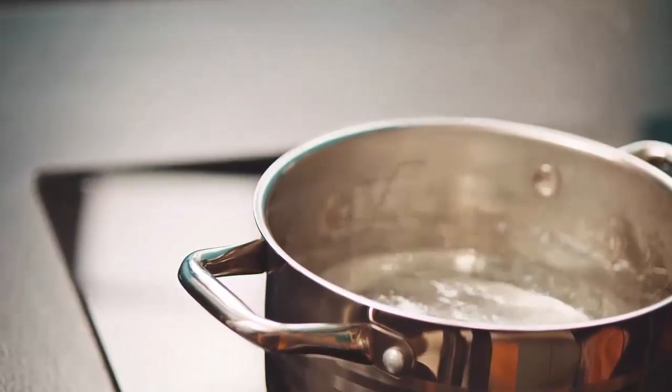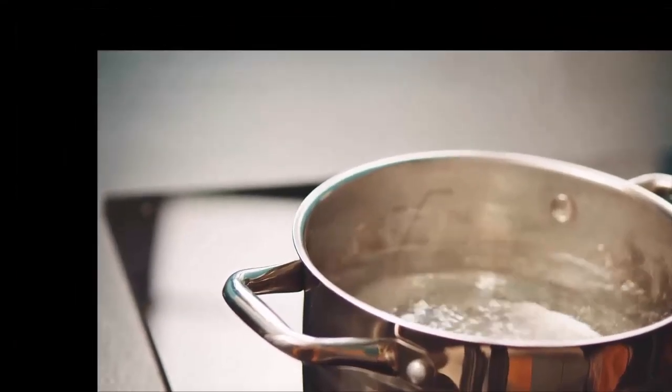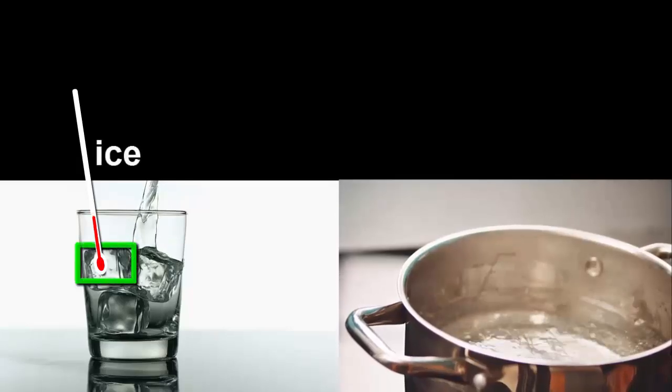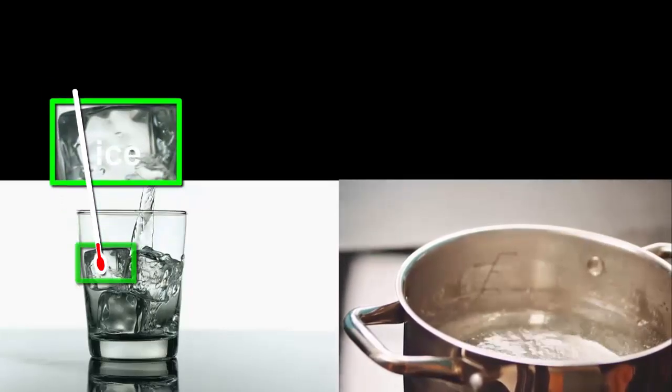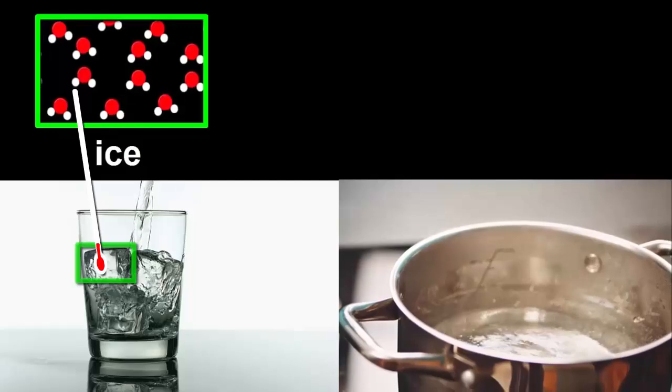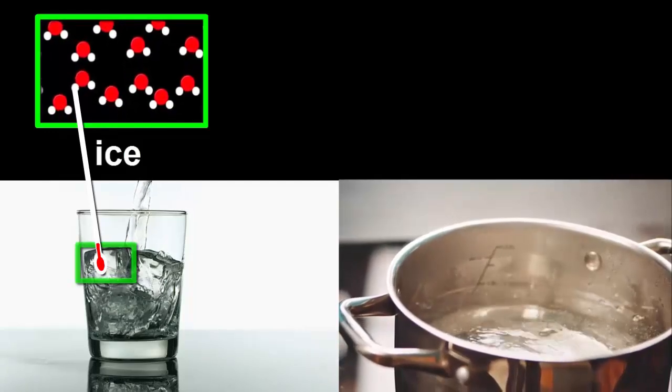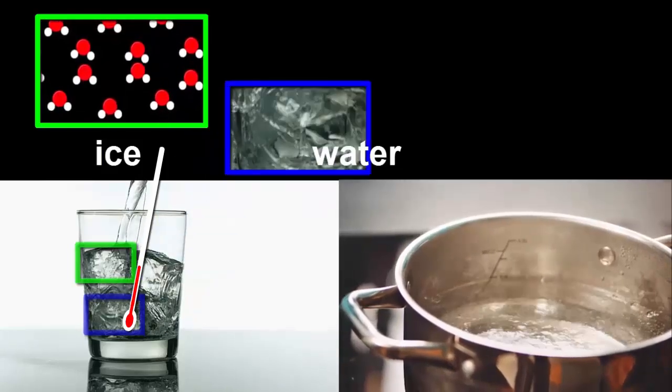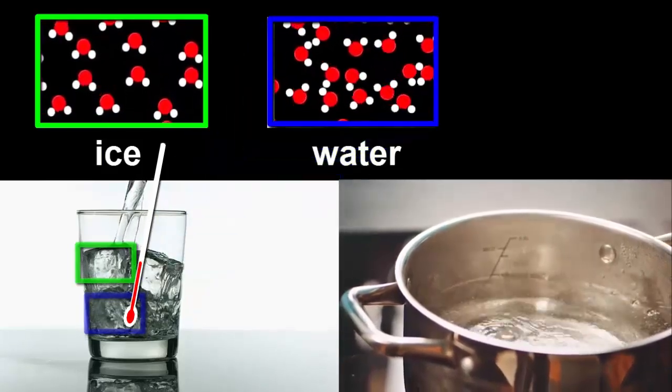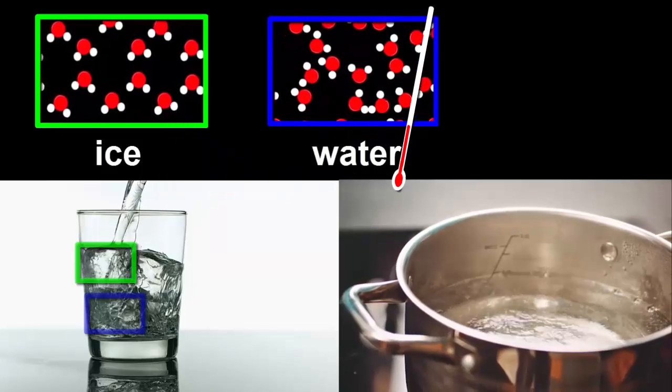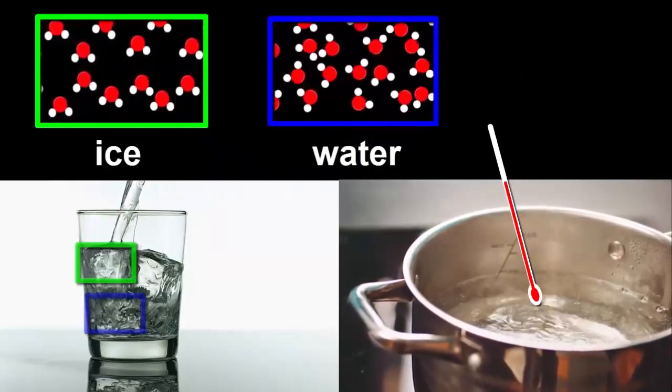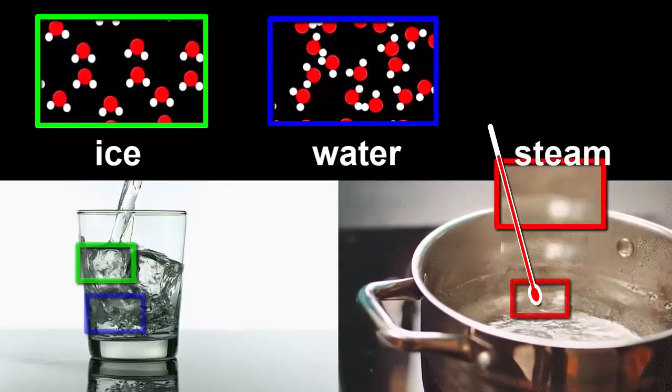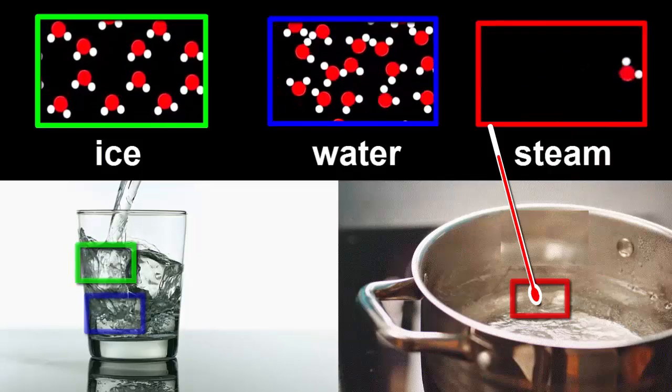There seems to be a connection between the speed of the molecules of a substance and its temperature. Ice is the coldest form of H2O, zero or below, and its molecules go quite slowly. Water is warmer, between 0 and 100, and its molecules are faster. And steam is the hottest, 100 or above, with its molecules going the fastest.